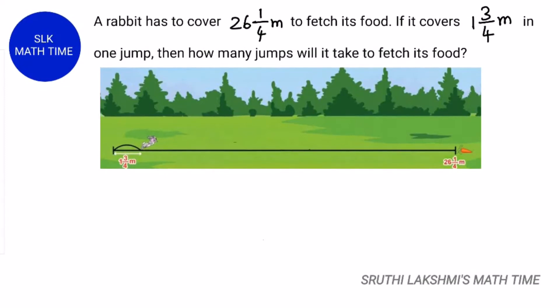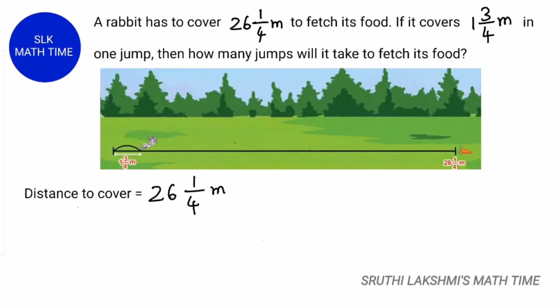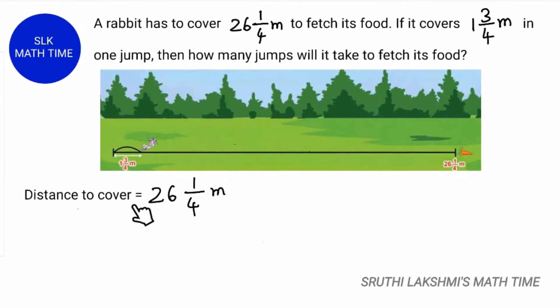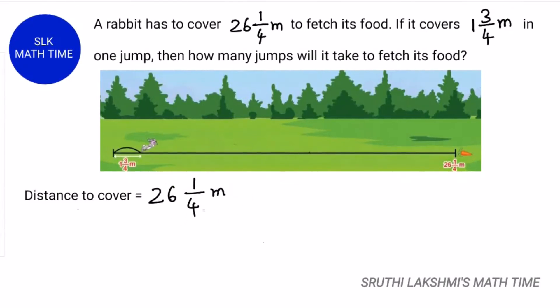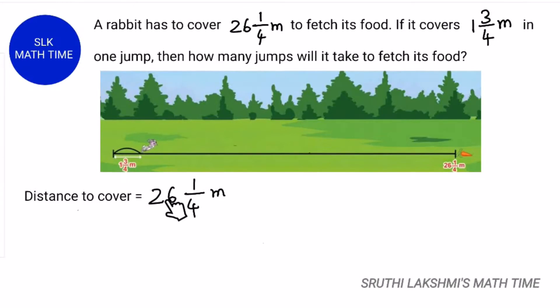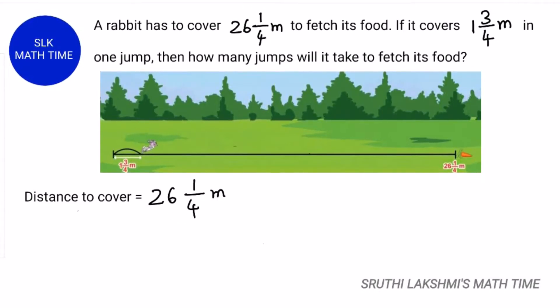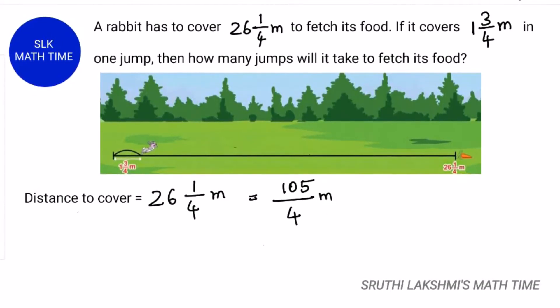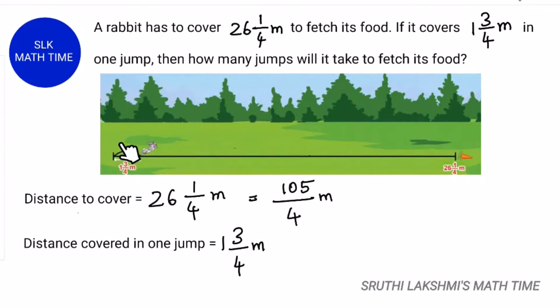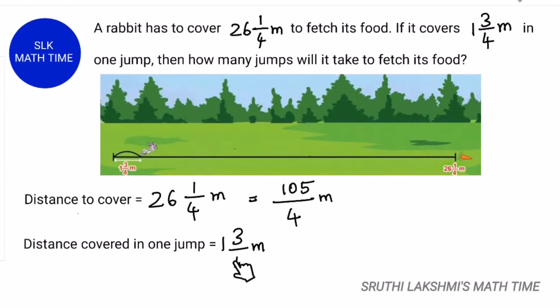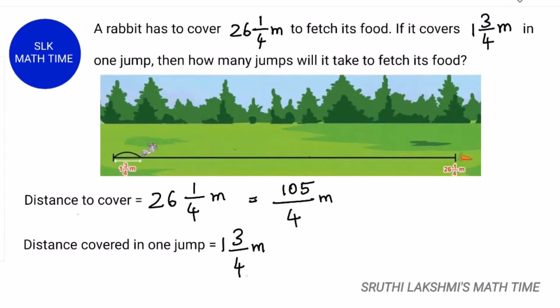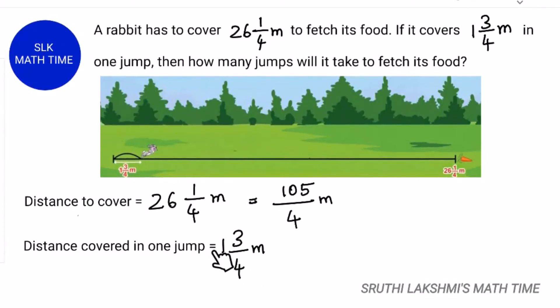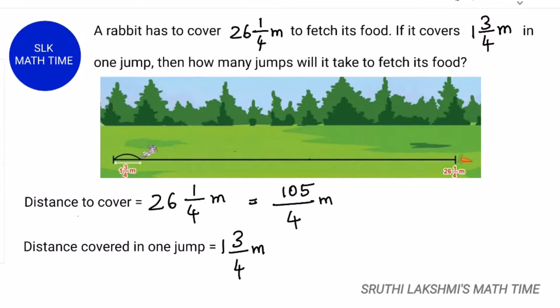So the rabbit has to cover a distance of 26 1 by 4 meters to fetch its food. When we change 26 1 by 4 to an improper fraction, 4 into 26 is 104 and 104 plus 1 is 105 by 4 meters. And the distance it covers in one jump is 1 3 by 4 meters. So we have to change 1 3 by 4 meters to an improper fraction. So 4 into 1 is 4 and 4 plus 3 is 7 by 4 meters.